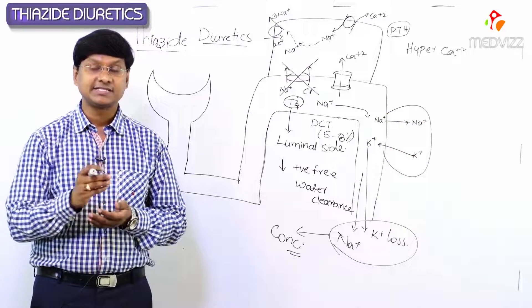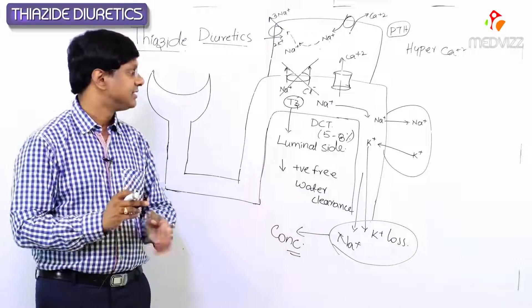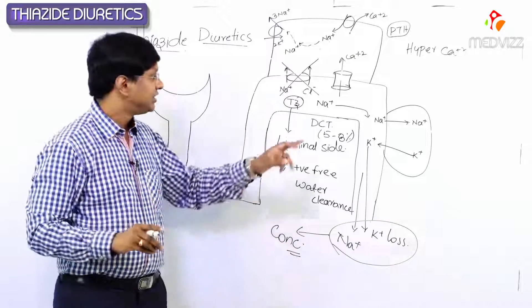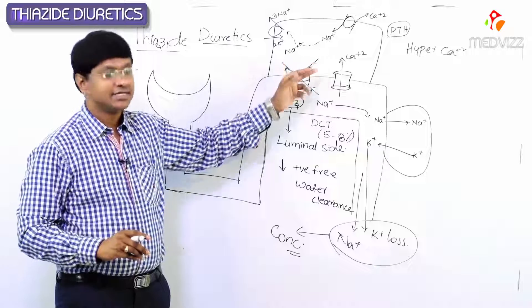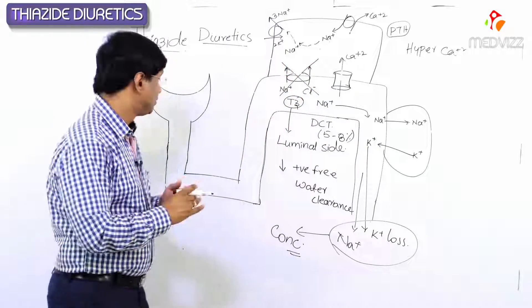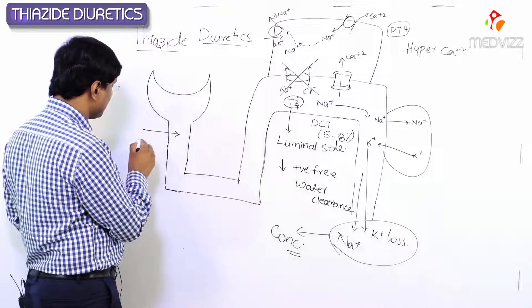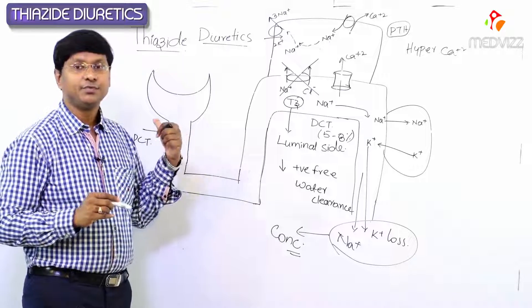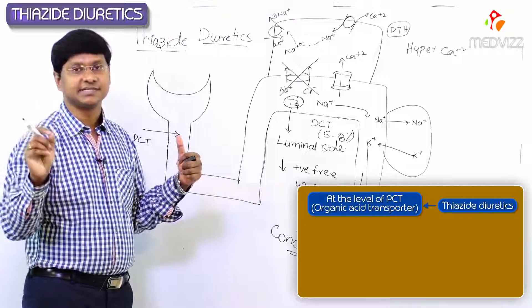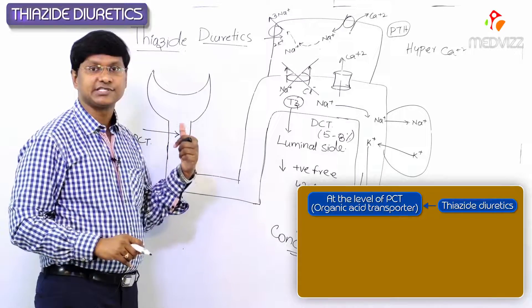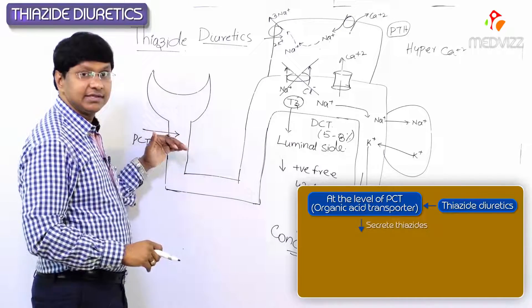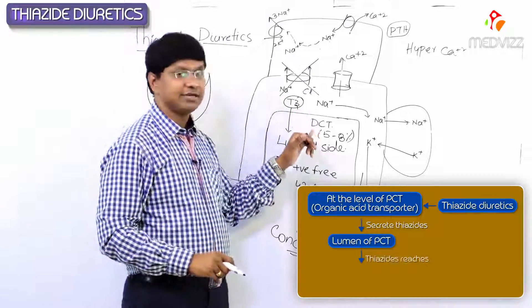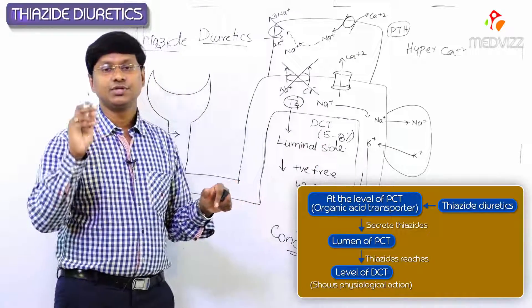These drugs act at the level of the distal convoluted tubule from the luminal side. They reach the lumen of the nephron via secretion at the level of the proximal convoluted tubule. At the proximal convoluted tubule, we have an organic acid transporter system which secretes the thiazides into the lumen. These thiazides then reach up to the level of the distal convoluted tubule and show their pharmacological action.